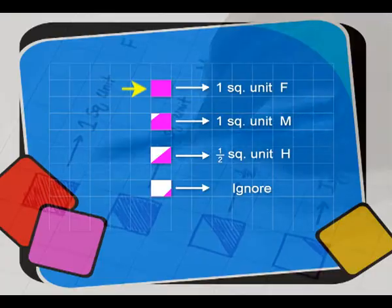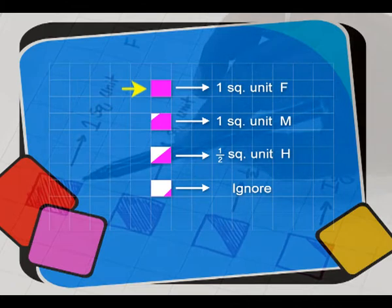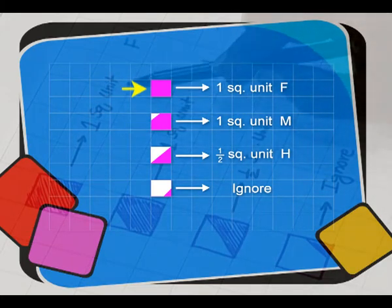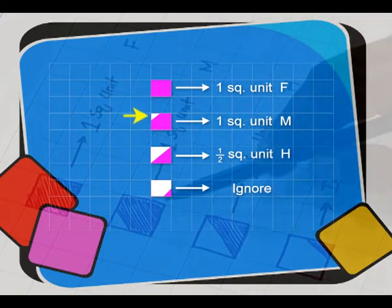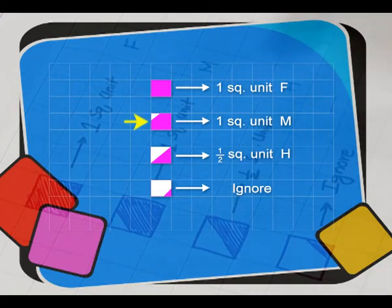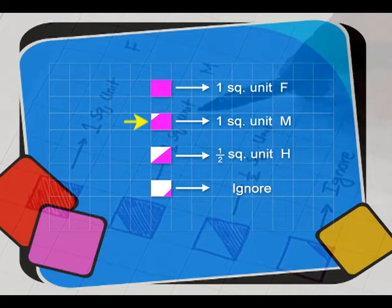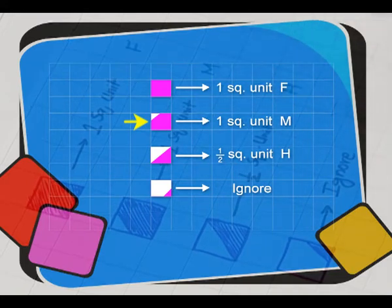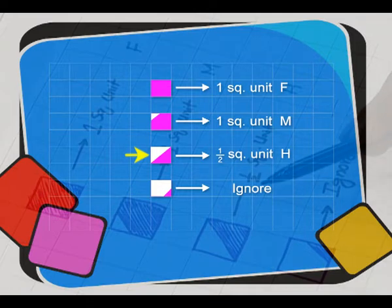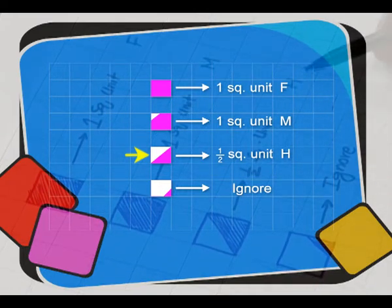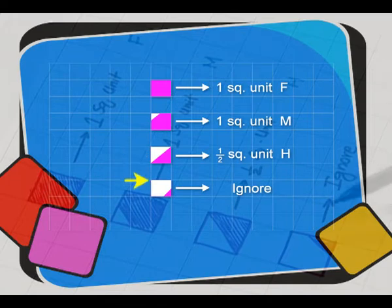Now we find the area of this triangle by counting the squares. While counting the squares, we follow the procedure. The squares which are fully covered, we take it as one square unit and we indicate by F. The squares which are covered more than half, we also consider as one square unit and we indicate by M. The squares which are half covered are indicated by half square unit and indicated by H, and the squares which are less than half are ignored.